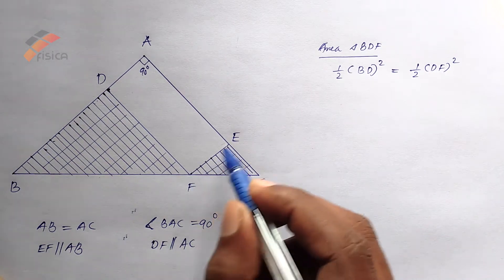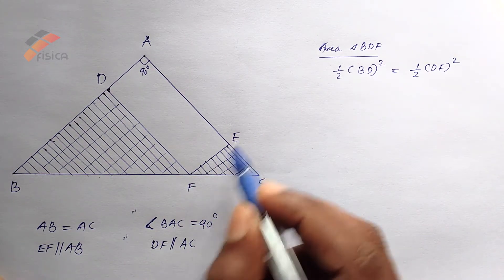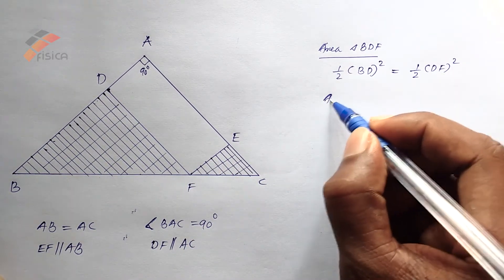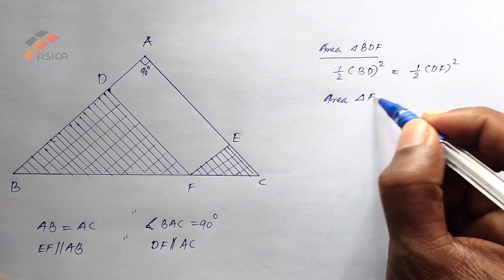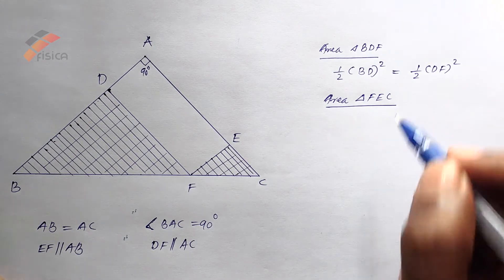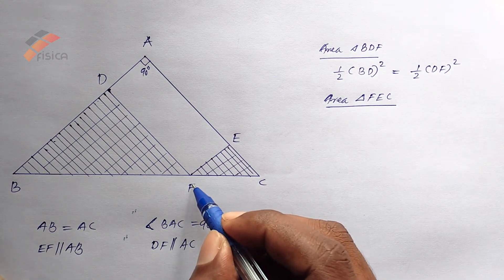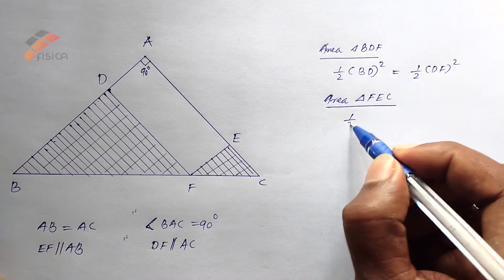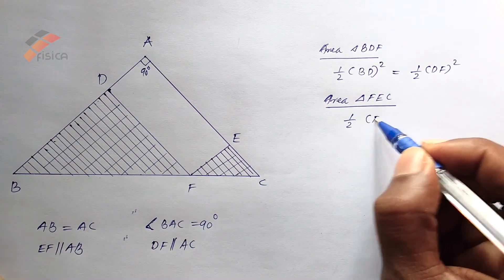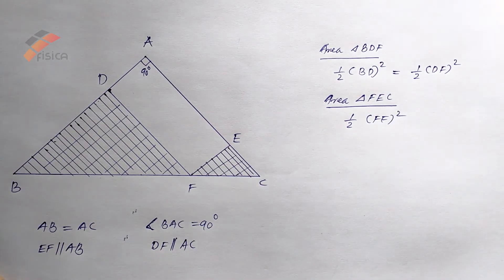I have to find out the area of FEC, the triangle FEC. Area of triangle FEC. That is equal to, here also, FE equals EC. Area of the triangle is half into FE squared.